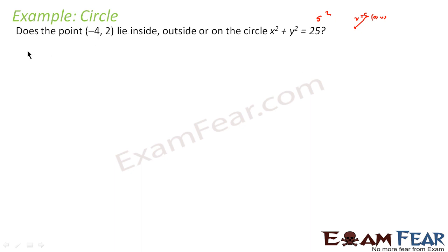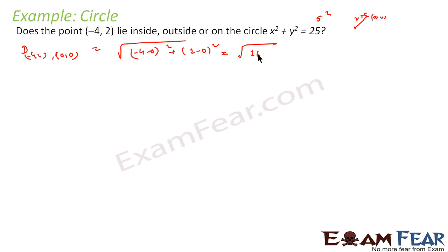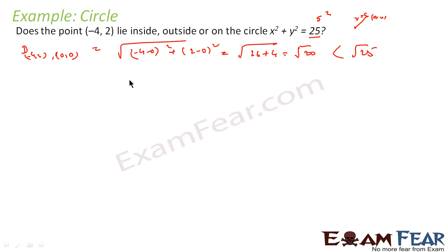If the value is less than 5, the point is inside the circle. So let's find the value of d between (-4, 2) and (0, 0). That is the square root of (-4 - 0)² + (2 - 0)², which gives us √(16 + 4) = √20. Now √20 is less than √25, since √25 equals r = 5.